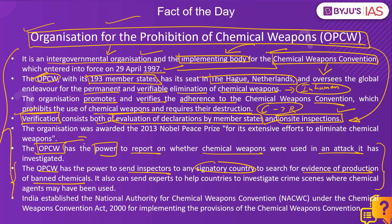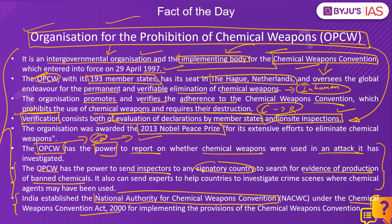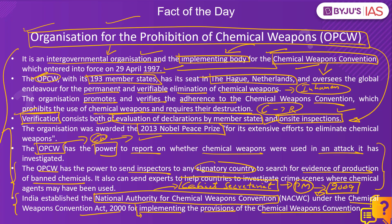The OPCW has played a key role in the elimination of chemical weapons around the world, and in recognition of these efforts, it was awarded the Nobel Peace Prize in 2013. As per the obligations of this convention, India enacted the Chemical Weapons Convention Act of 2000, under which the National Authority for Chemical Weapons Convention was set up under the Cabinet Secretariat, directly reporting to the Prime Minister. This national authority ensured that by 2009, India eliminated all its chemical weapons stockpile and provided for complete implementation and enforcement of the convention's provisions in India.